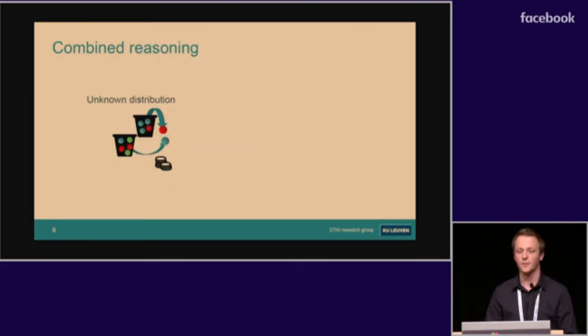To really demonstrate what DeepProbLog can do in all of its possibilities, we decided to make a little experiment where you have to simultaneously train a neural network from scratch, perform probabilistic reasoning, and learn an unknown probability distribution.